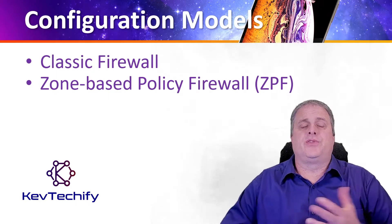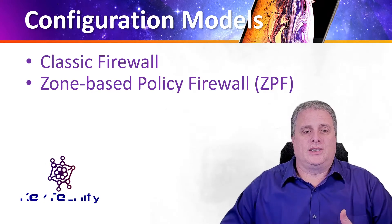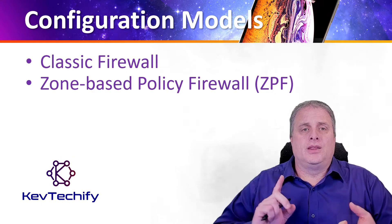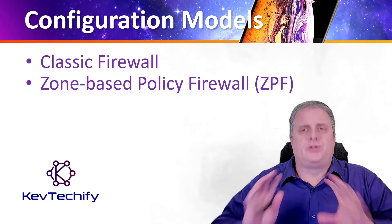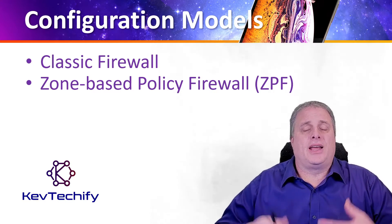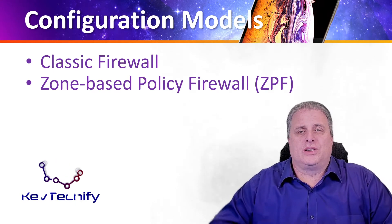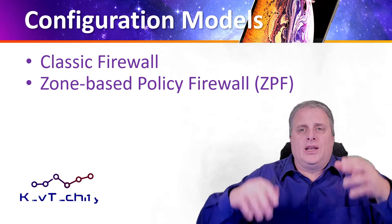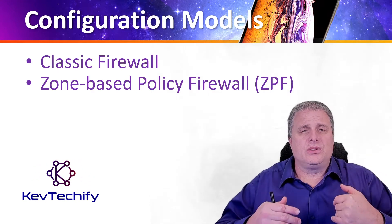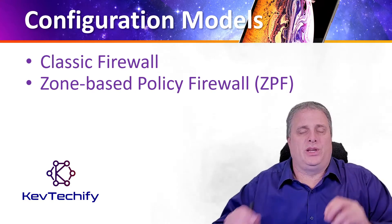There are two configuration models for a Cisco IOS firewall: classic firewall and the zone-based policy firewall. The classic firewall is the traditional configuration model in which the firewall policy is applied on the interfaces. The zone-based policy firewall is the new configuration mode, where the interfaces are assigned to security zones, and the firewall policy is applied to traffic moving between the zones.